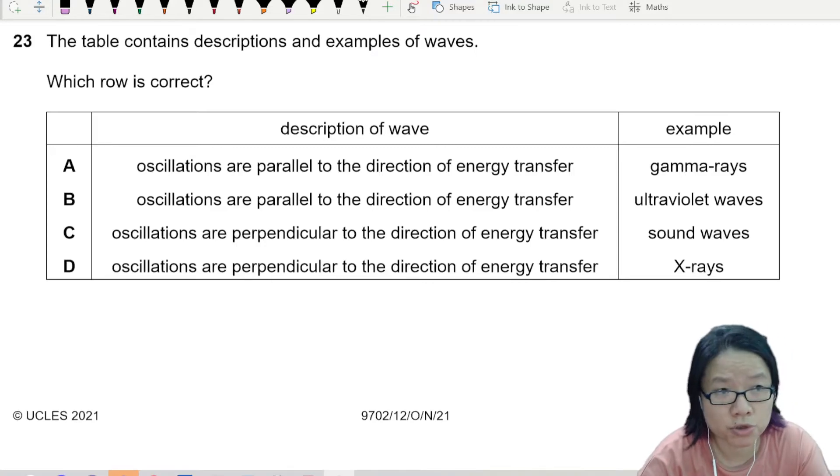All right, so the table contains descriptions and examples of waves. Which row is correct?